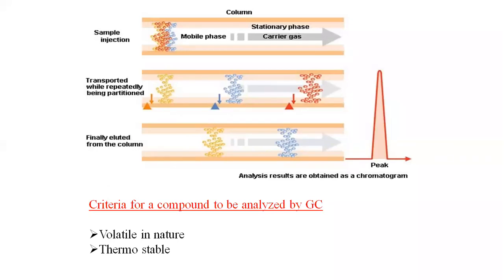The criteria for a compound to be analyzed by GC: the compound should be volatile in nature, or easily converted to a volatile derivative upon applying a little amount of temperature. When we apply thermal energy, the state of matter should convert from liquid state to gas state, but there should be no change in chemical composition. Therefore, the compound must be thermostable. These are the two criteria: volatile in nature and thermostable.